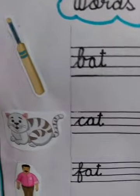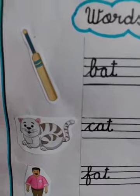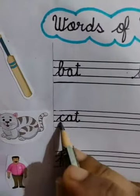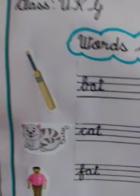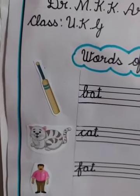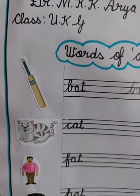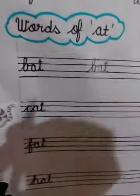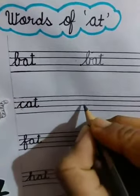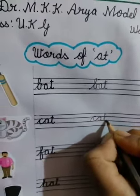Which picture is this? Yes, cat. Cat is a small animal with fur, a tail, and four legs. Cat says meow. Now we will write here: C-at, cat.